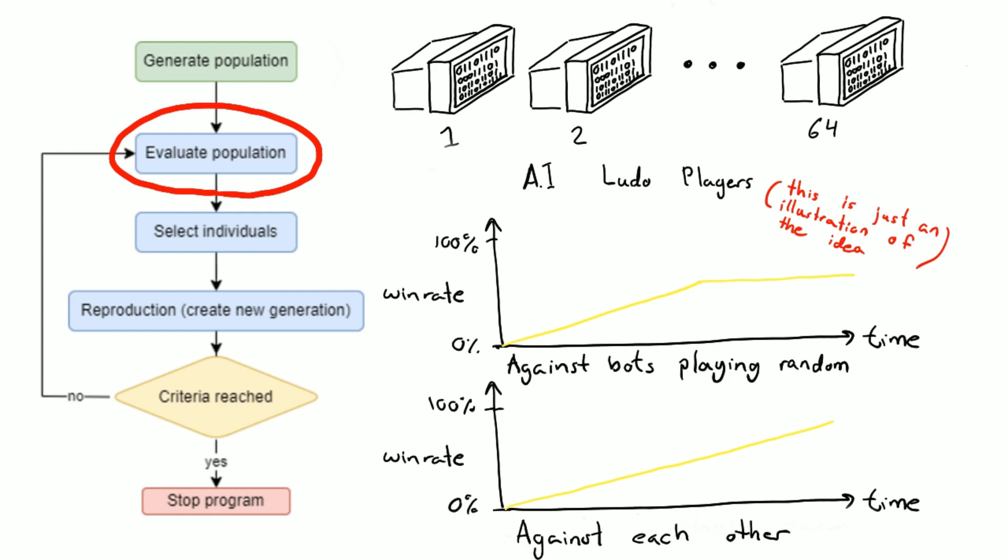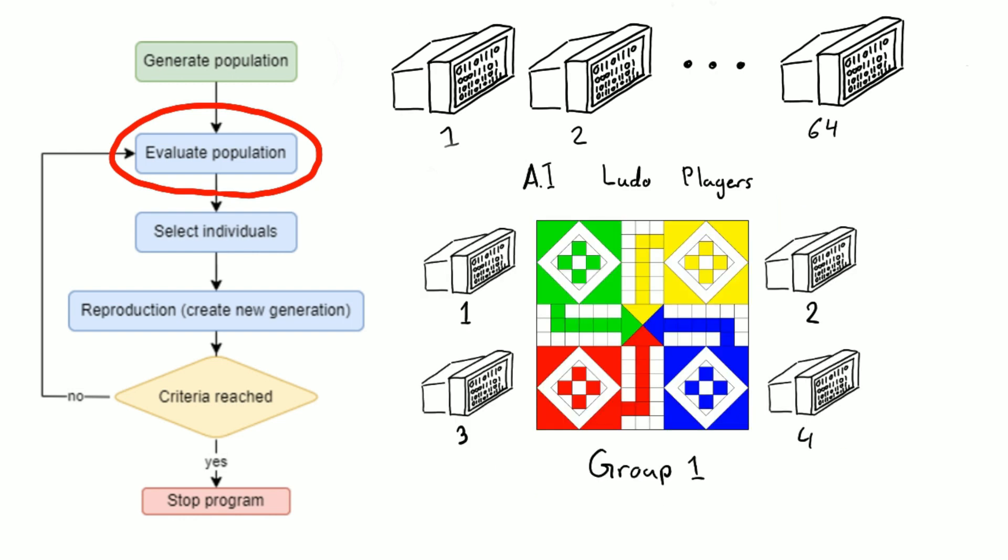But another issue is how to evaluate how good they are. If they only play ten games against each other then they could just have won by chance. Ludo is a fairly random game, so they need to play a lot in order to remove this randomness.